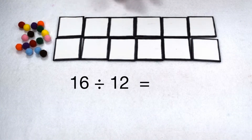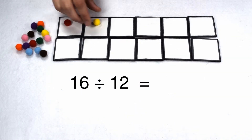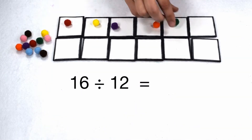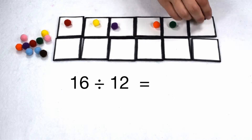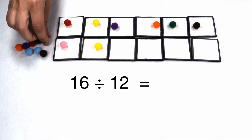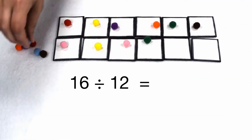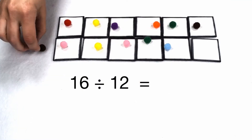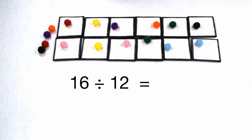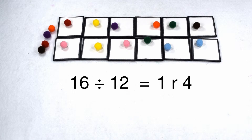Here we have 16 divided by 12. If 16 is divisible by 12, that means I should be able to put the same number of items in each group without having any leftovers or remainders. But as we can see, when we start to divide 16 by 12, I can put one item in each group and then have four items remaining. So 16 divided by 12 is 1 remainder 4.